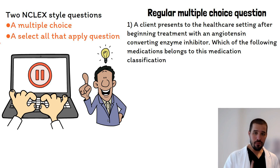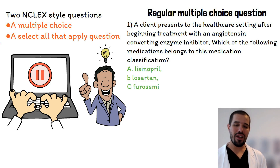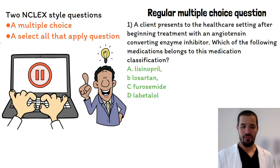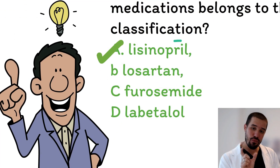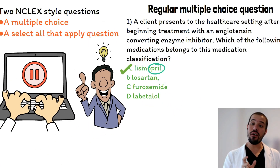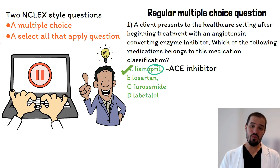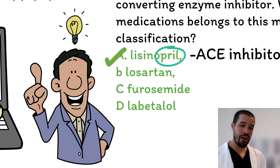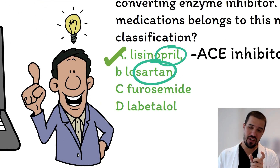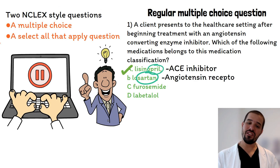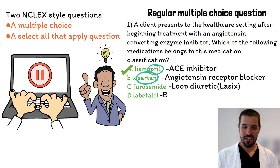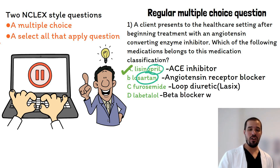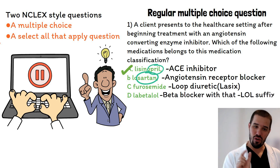The options are: A) lisinopril, B) losartan, C) furosemide, or D) labetalol. The answer is A — lisinopril. By identifying the PRIL suffix we can answer correctly. B) losartan with the -sartan suffix is an angiotensin receptor blocker. C) furosemide is a loop diuretic, also known as Lasix. D) labetalol with the -lol suffix is a beta blocker.